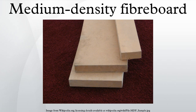Medium-density fiberboard is an engineered wood product made by breaking down hardwood or softwood residuals into wood fibers, often in a defibrator, combining it with wax and a resin binder, and forming panels by applying high temperature and pressure. MDF is generally denser than plywood. It is made up of separated fibers, but can be used as a building material similar in application to plywood.